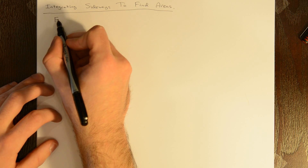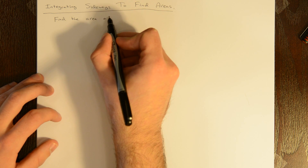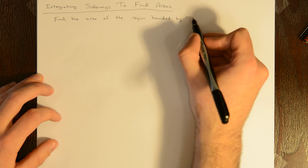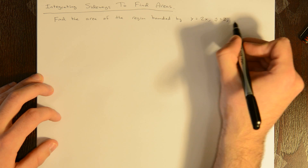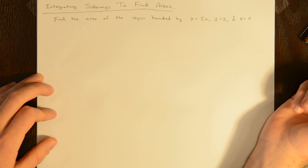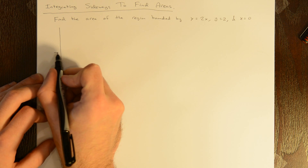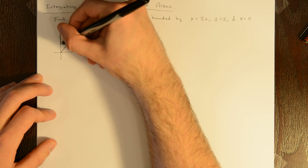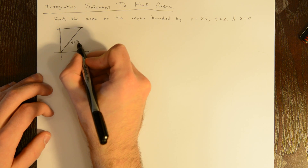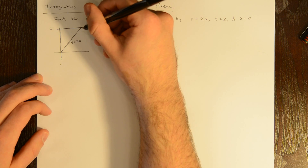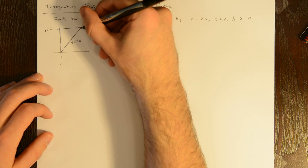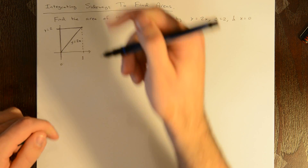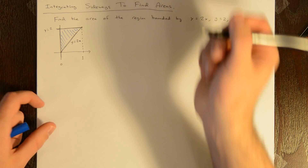So let's find the area of the region bounded by y equals 2x, y equals 2, and the y-axis, x equals 0. This is just a triangle, so we can triple-check our answer. We're going to find the area three different ways and make sure we get the same answer. y equals 2x and y equals 2, this horizontal line, meet when x equals 1. So we're trying to find the area of that triangle.